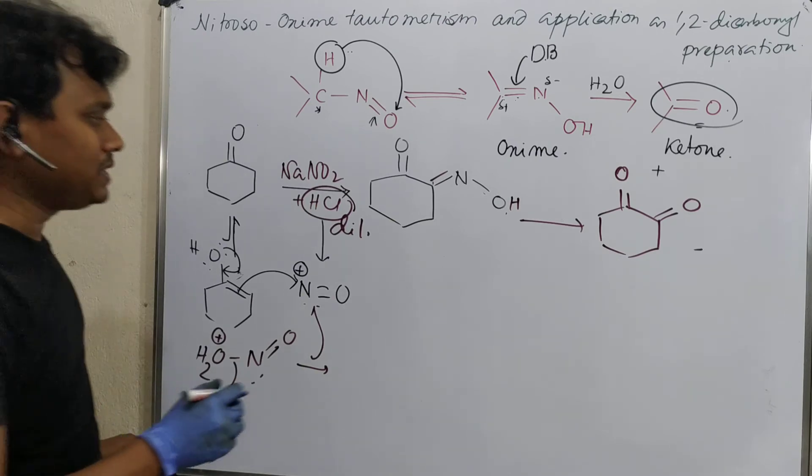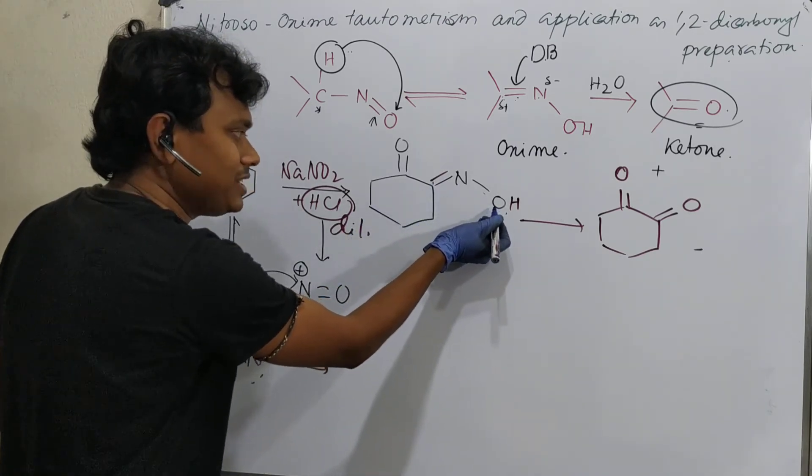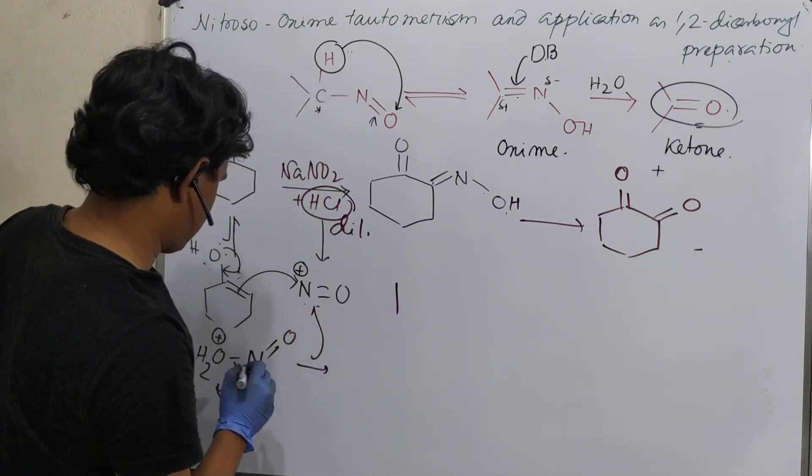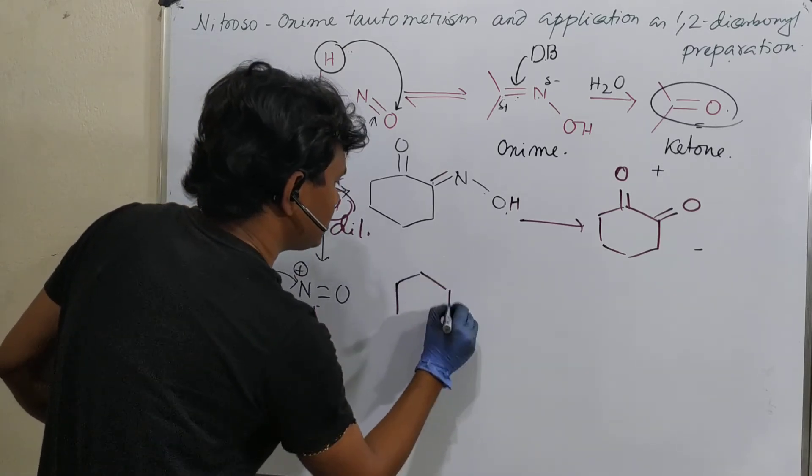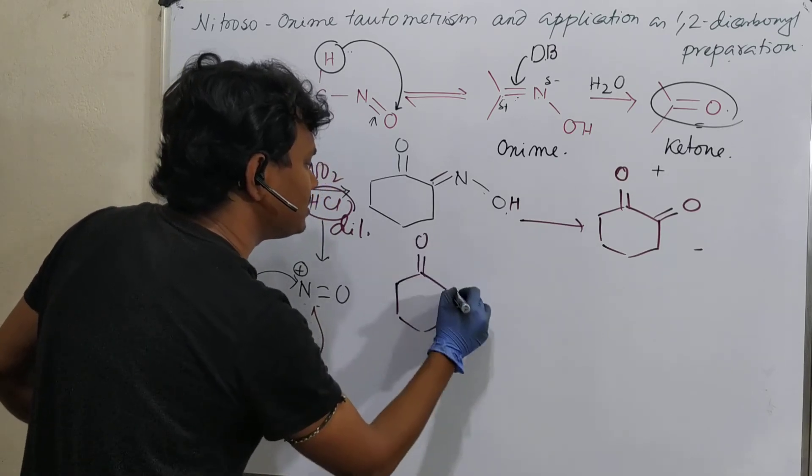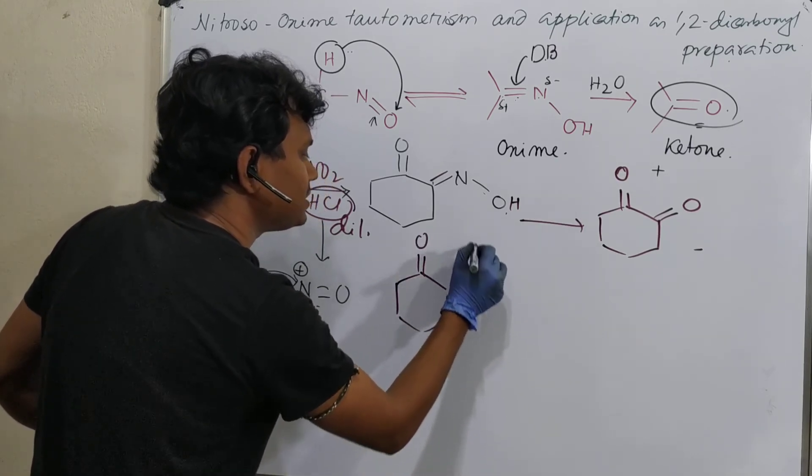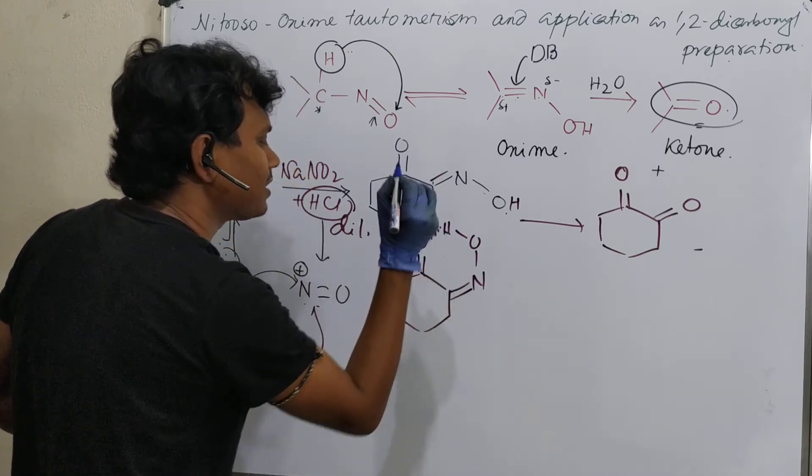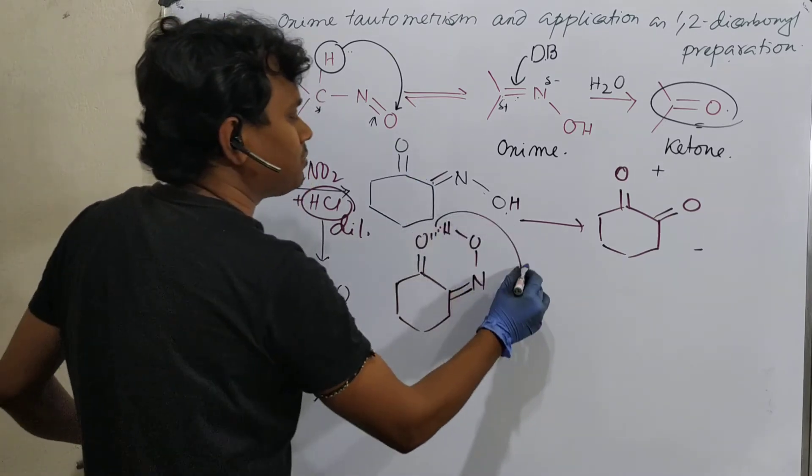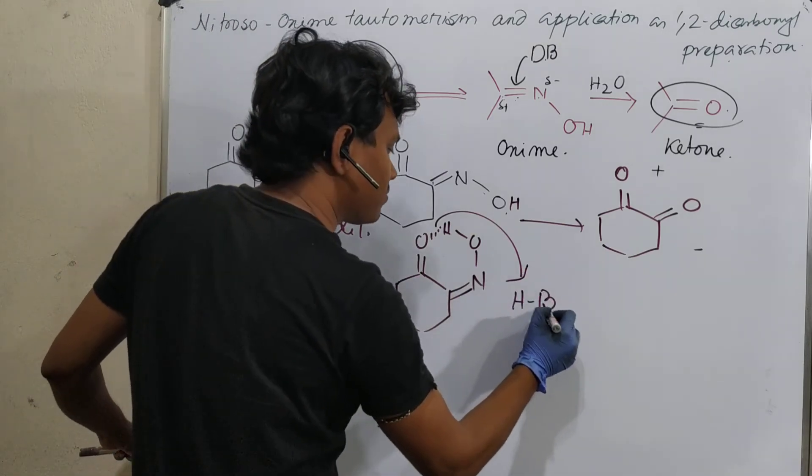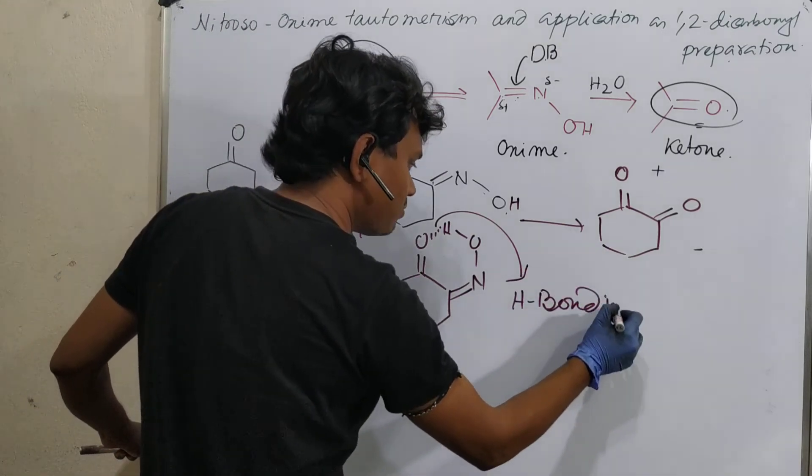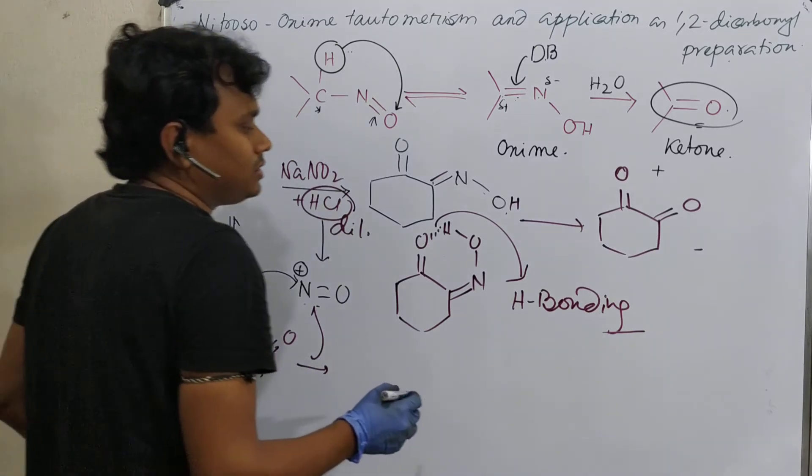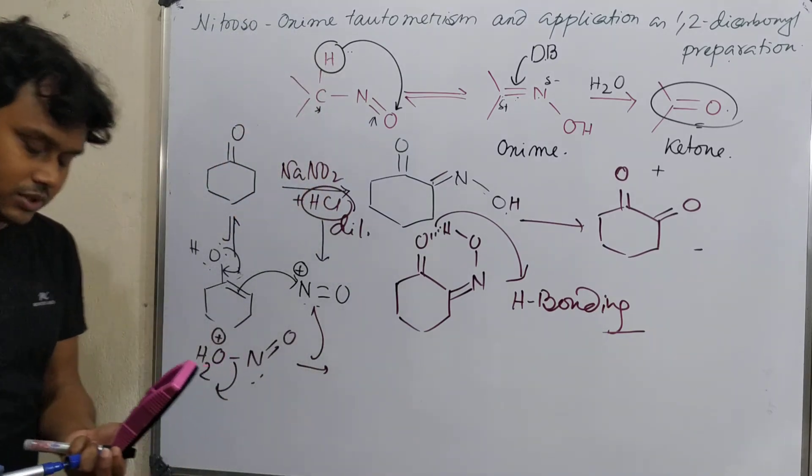By the way, one important information, please keep it in mind. This doesn't prefer to remain in this way rather than this is a double bond. This is nitrogen. This is oxygen. This. Because this hydrogen bonding stabilizes this compound. Intramolecular, better to say intramolecular hydrogen bonding.